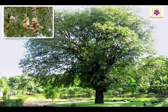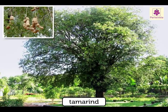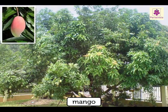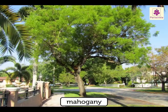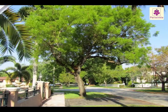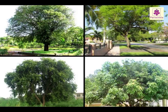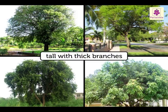Some evergreen trees that grow in the plains are tamarind, mango, rosewood, and mahogany. These trees are tall with thick branches which grow from the main trunk.